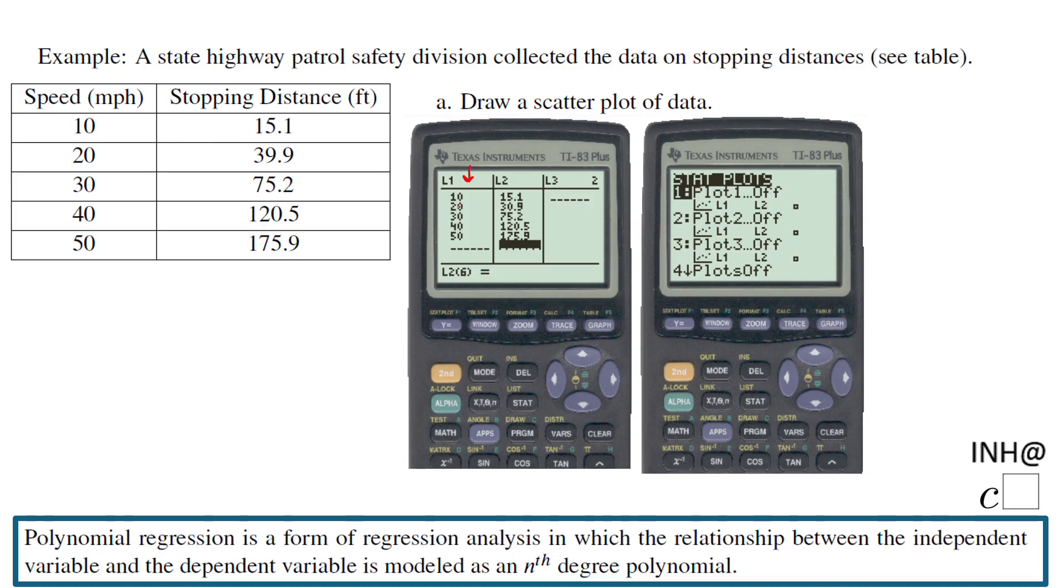You're going to get a table like this one where you type in your information. I will start with the first list where I type 10, 20, 30, 40, 50. Then you move with this arrow to the right and type on L2 the second column. I will suggest you to double check always because you want to be sure you have the correct data in your calculator.